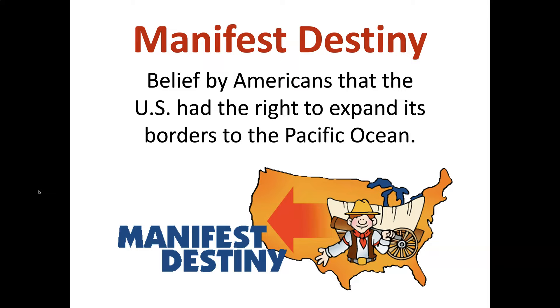Manifest destiny was the belief by Americans in the middle of the 1800s that the United States had the right to expand its borders from where it began in the east at the Atlantic Ocean all the way west to the Pacific Ocean — that the United States had the right to traverse the entire continent and take control of it.